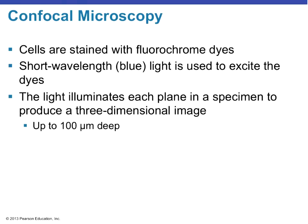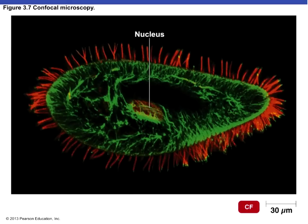Confocal microscopy also uses fluorochrome dyes, but instead of ultraviolet light, we use blue light to excite the dyes, giving a shorter wavelength. Remember: shorter wavelength means higher resolution. The light illuminates each plane of the specimen, giving a true three-dimensional image — as opposed to DIC, which showed foreground vs. background but never a true 3D picture. Here is confocal microscopy of the same paramecium, showing a more three-dimensional image.